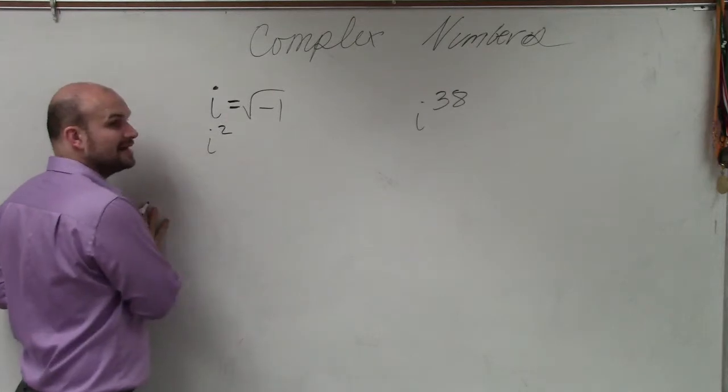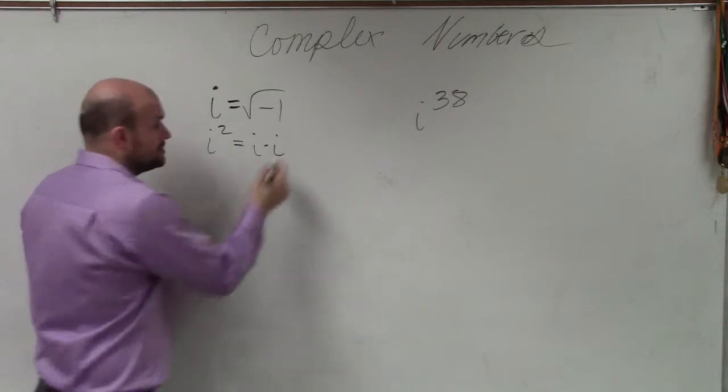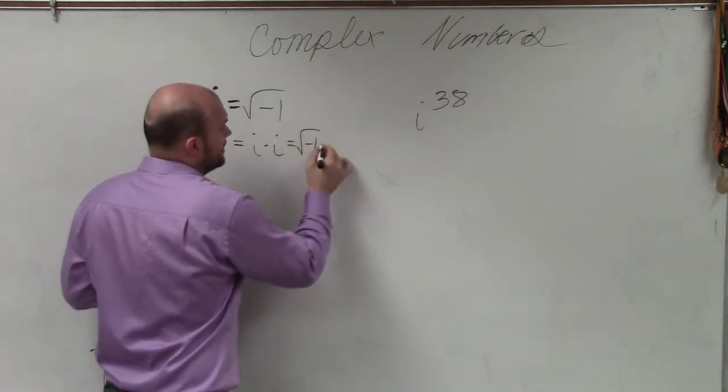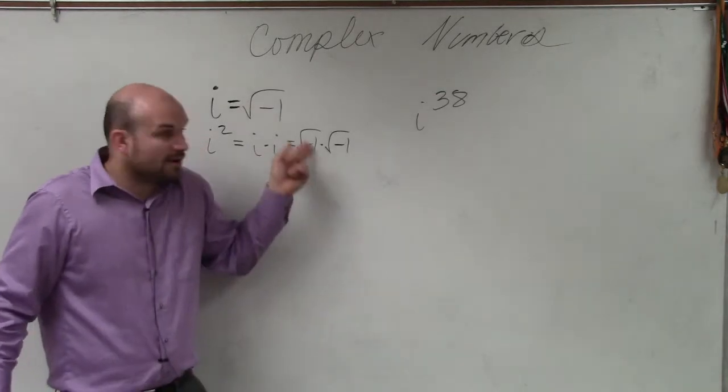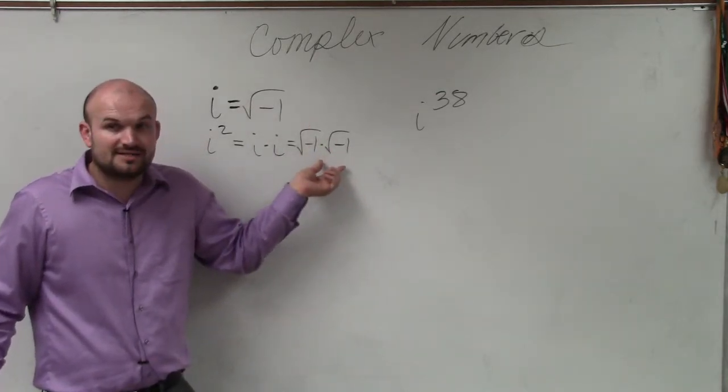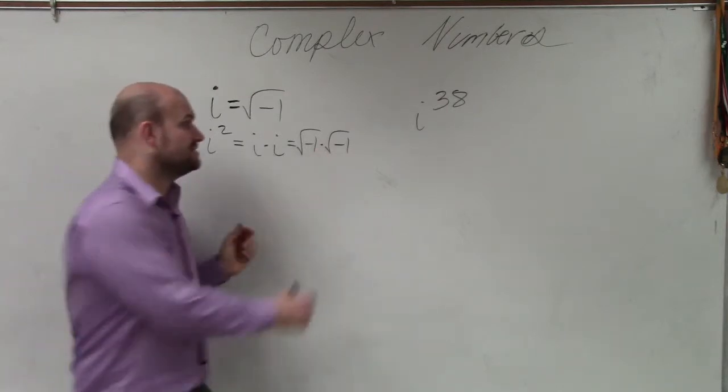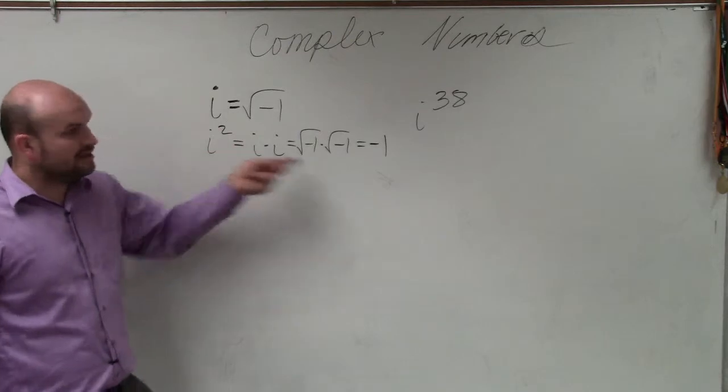So the first thing we'll do is do i squared, which is basically i times i, right? So therefore, that's really square root of negative 1 times the square root of negative 1. So something, the square root times the square root of the same number is just going to equal, in this case, negative 1. So i squared equals negative 1, right?